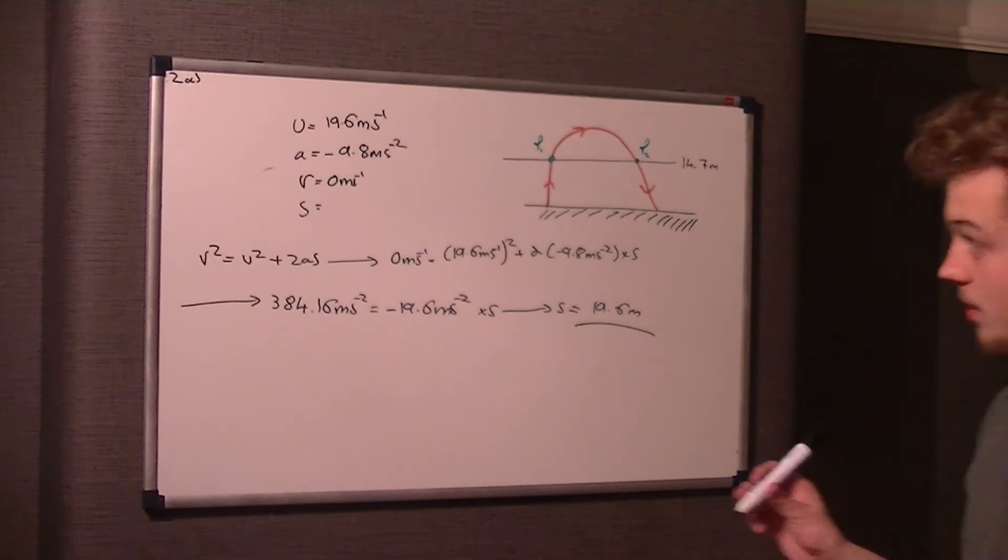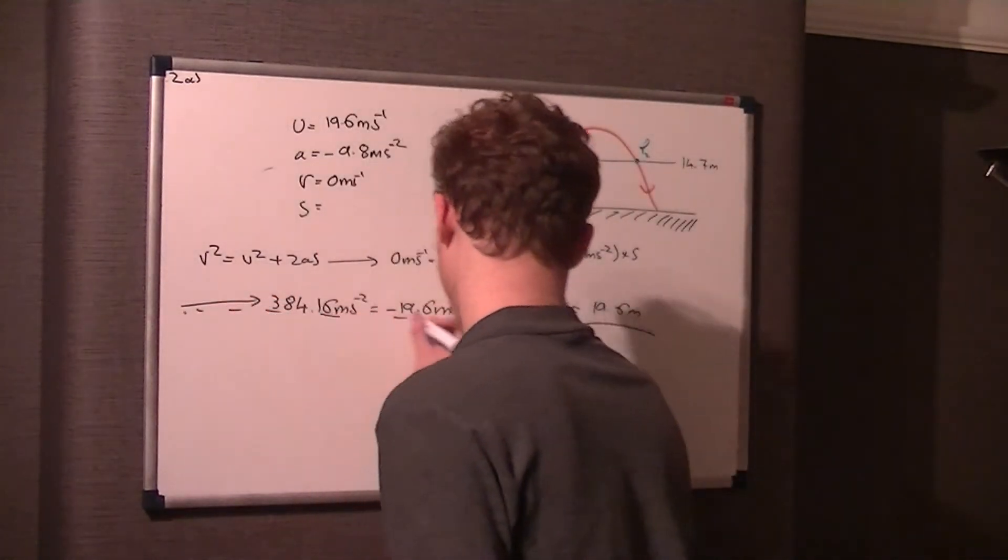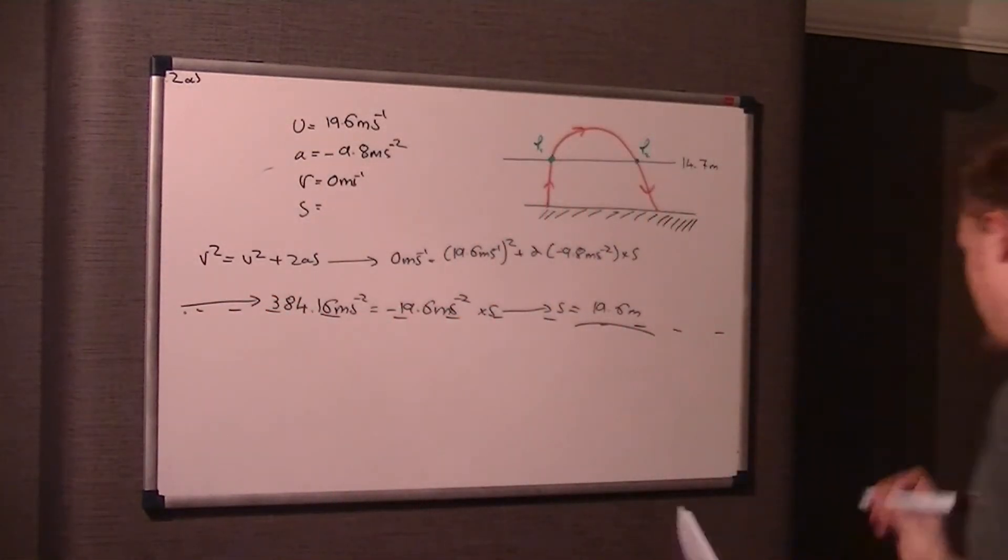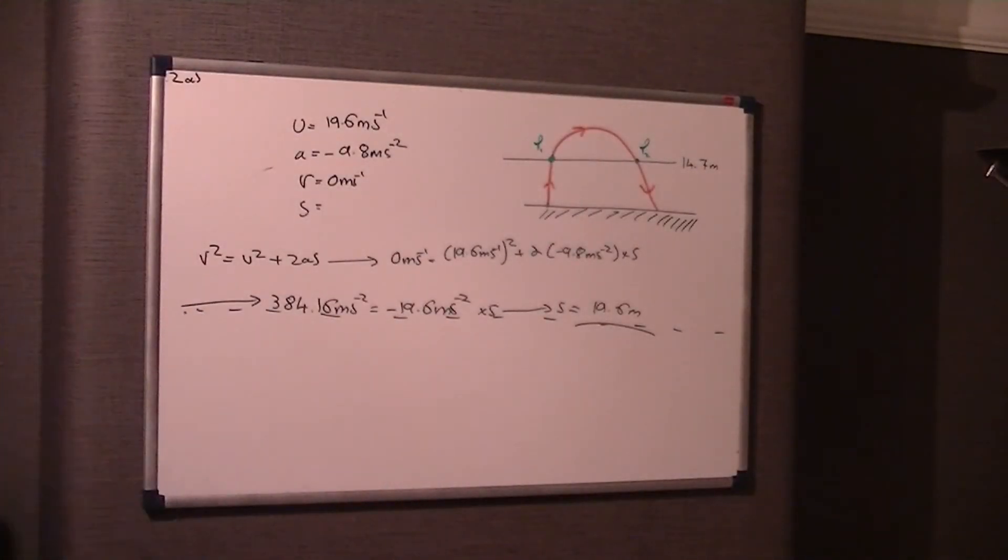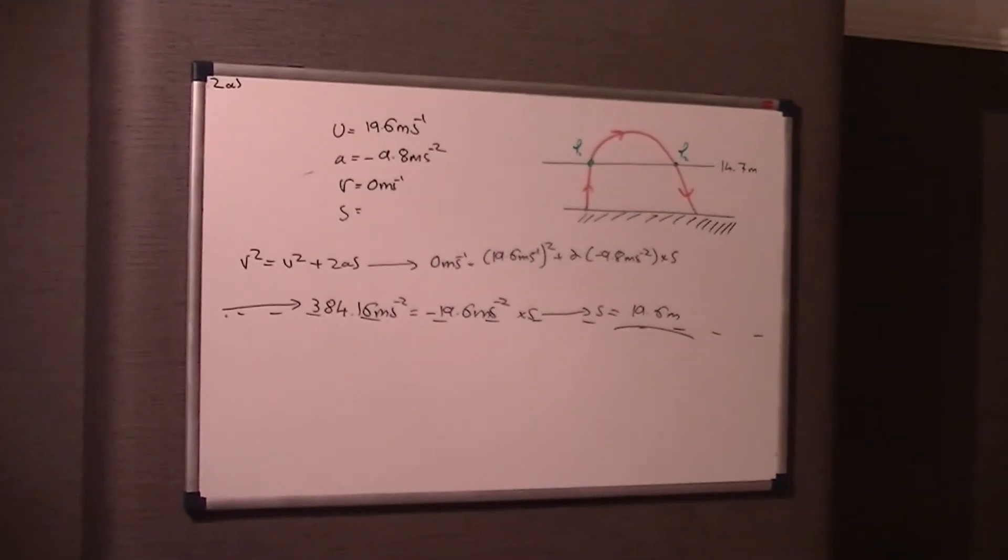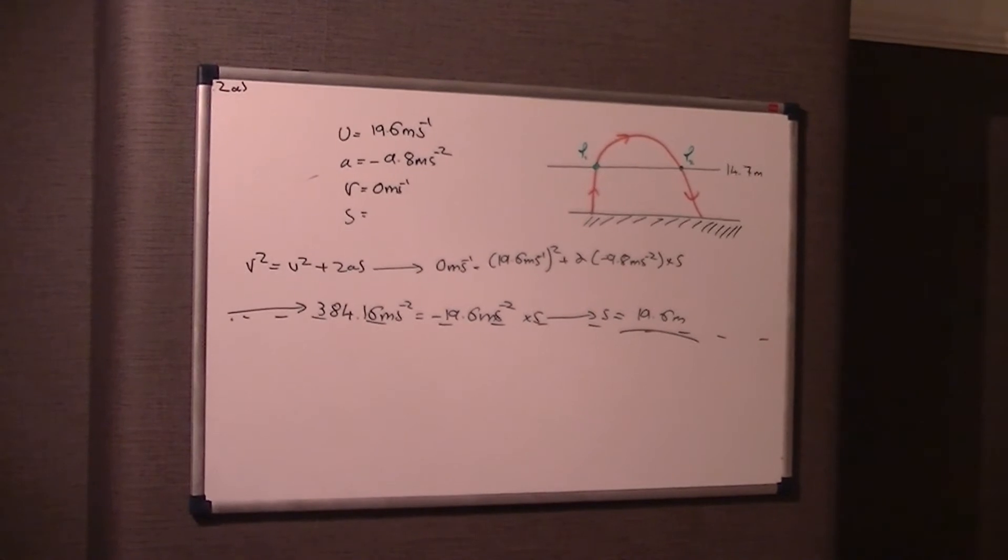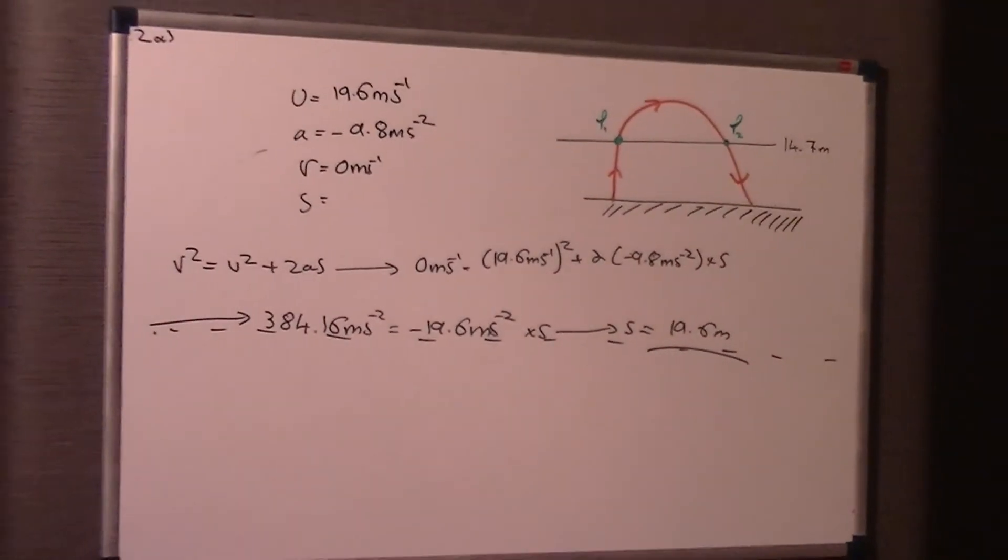Now part B is why I've drawn this graph here. So part B states, find the length of time for which the stone is above 14.7 meters.